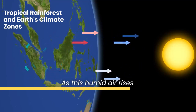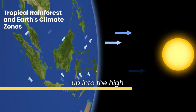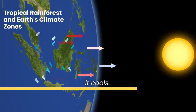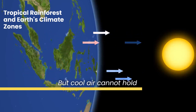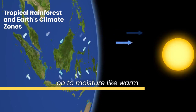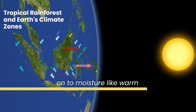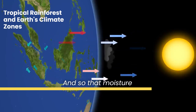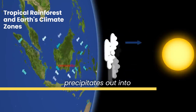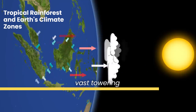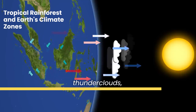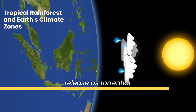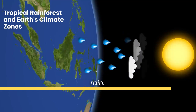As this humid air rises up into the high atmosphere, it cools. But cool air cannot hold on to moisture like warm air can. And so that moisture precipitates out into vast towering thunderclouds, which then finally release as torrential rain.